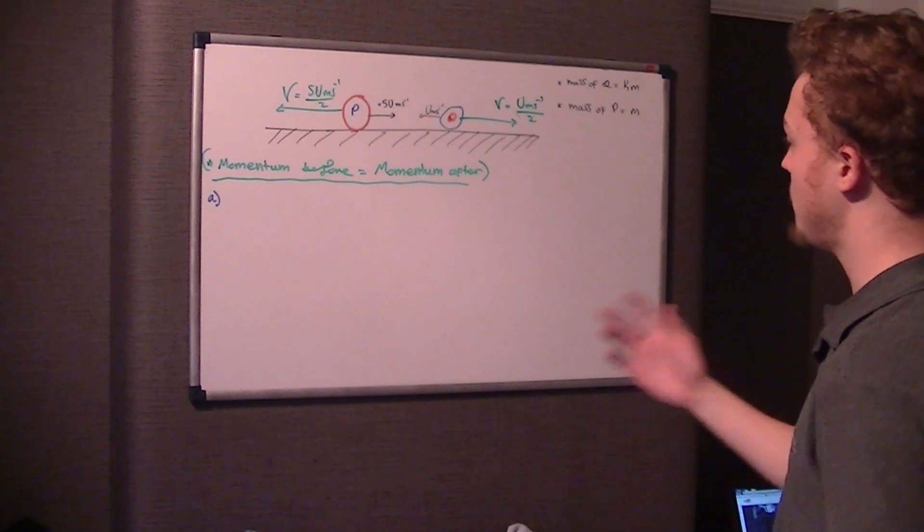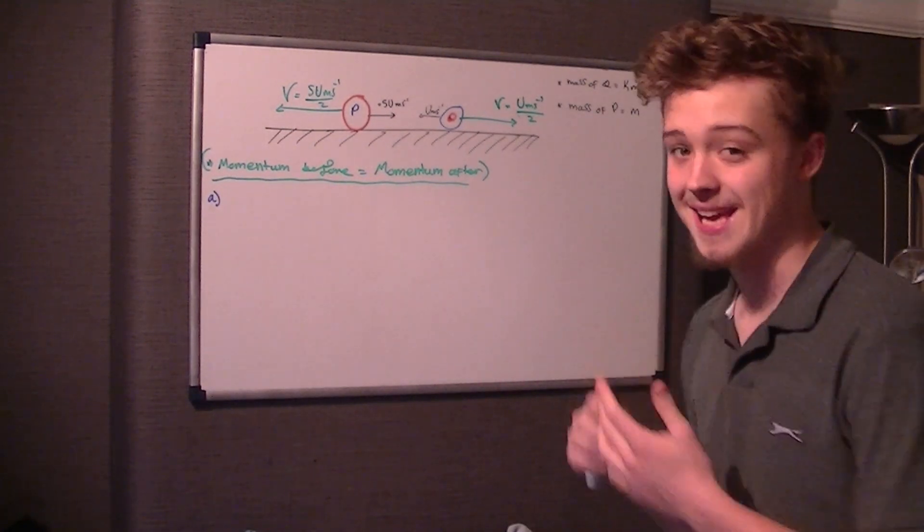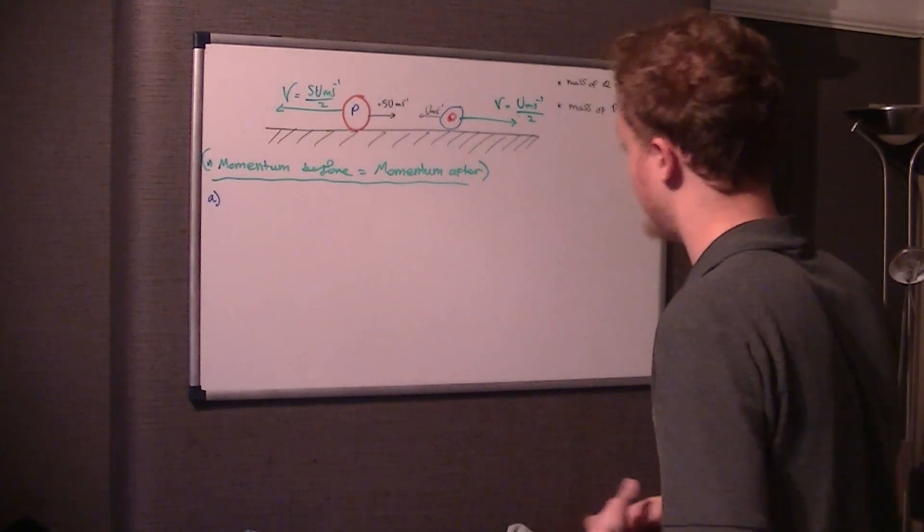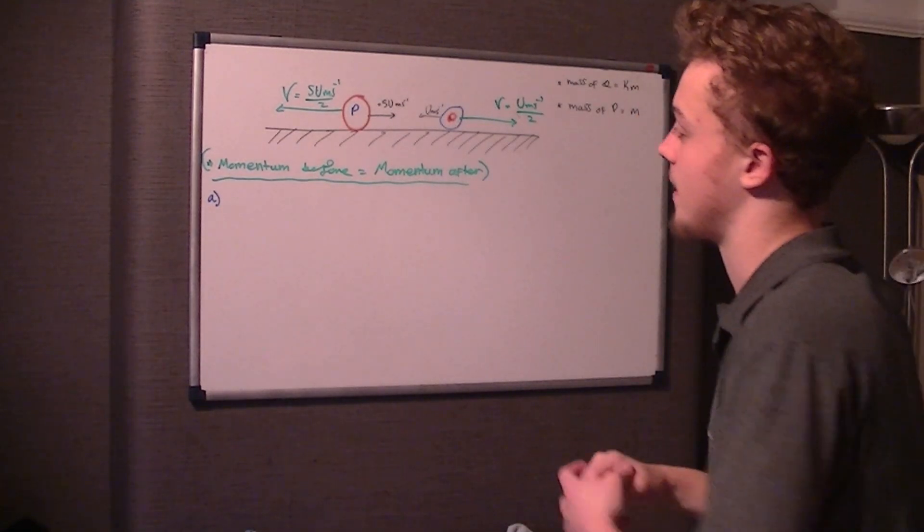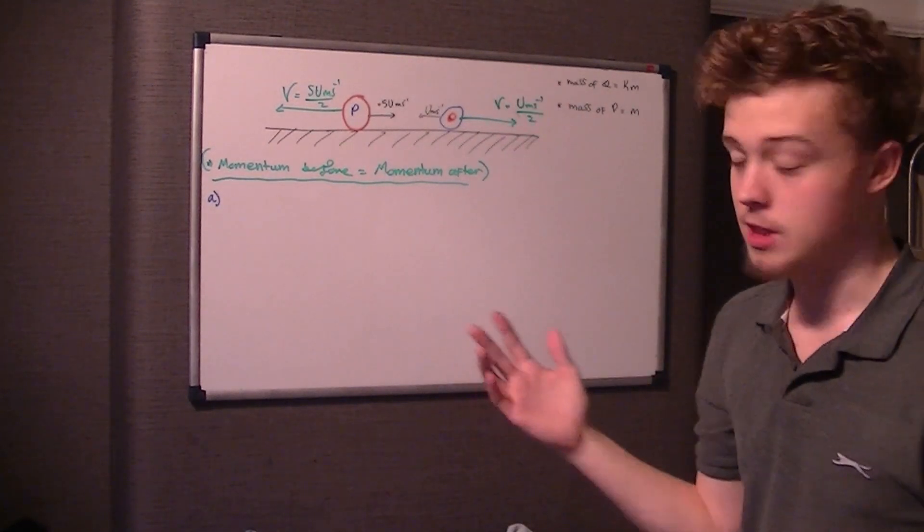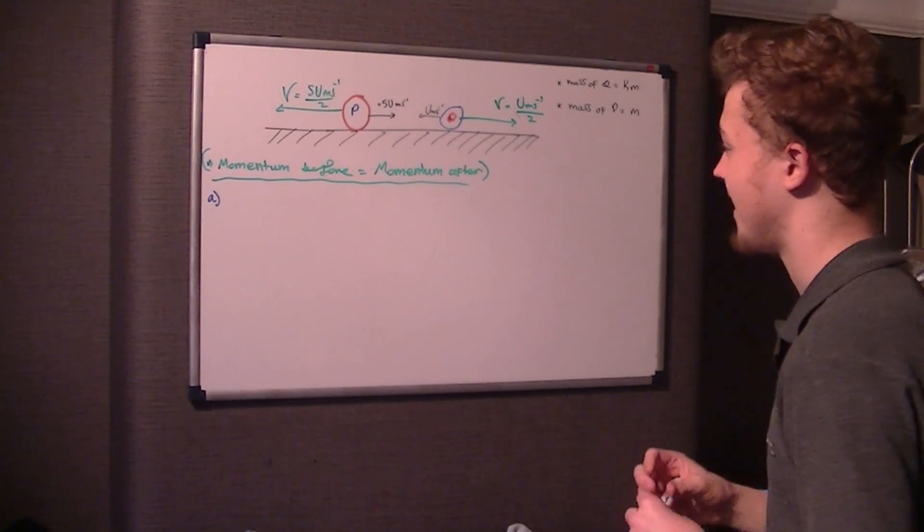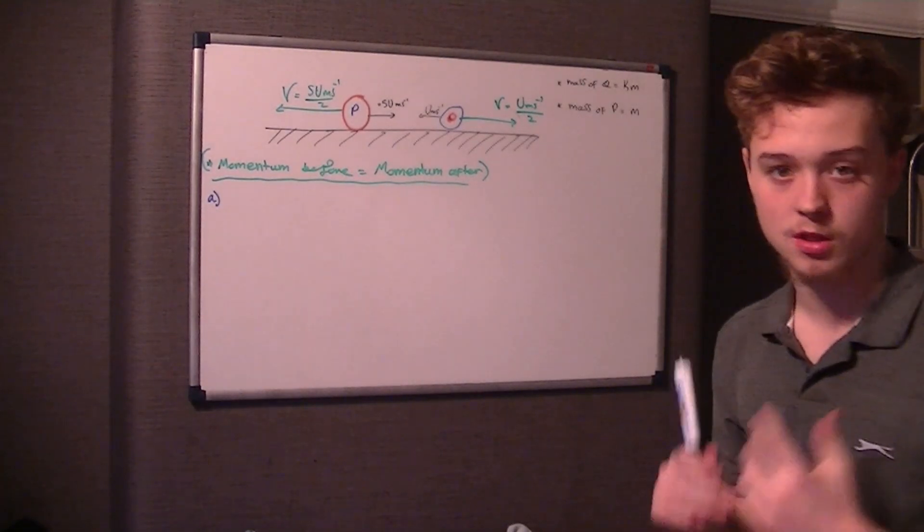What I'm trying to draw here is the scenario that you're given. We've got two particles, P and Q. P has a mass of just M, Q has a mass of KM. Now, we don't know what K is, but presumably we're probably going to be asked to find it out.